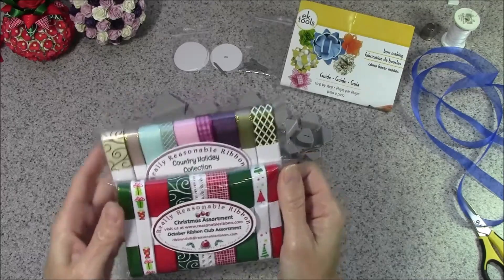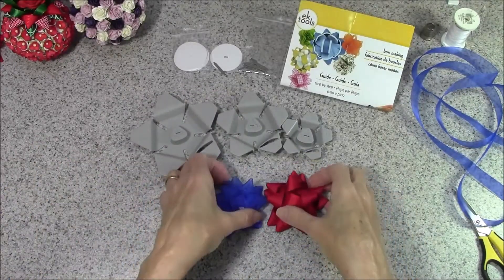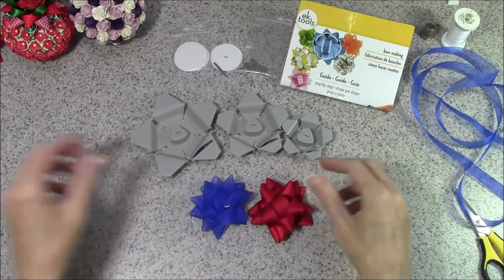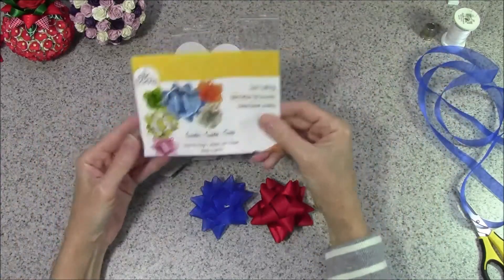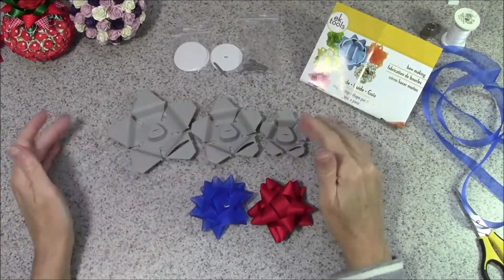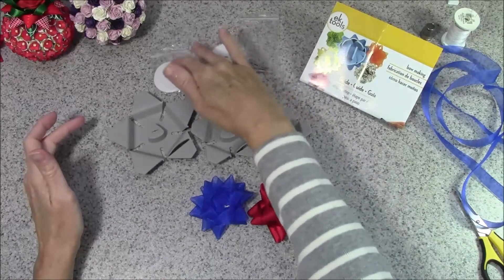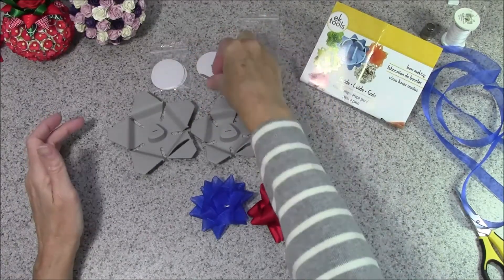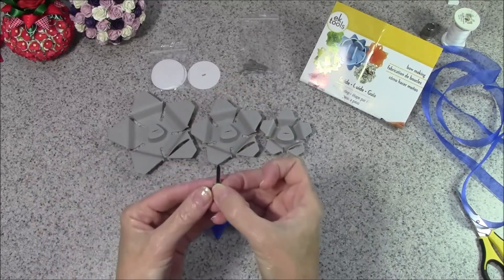This bow maker comes with the directions, the three templates, the adhesive sticky backing, and the little brad that you're supposed to pierce the ribbon through.